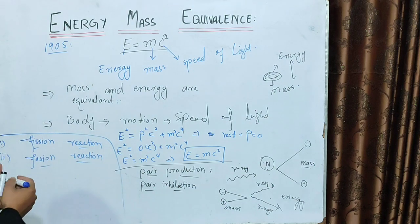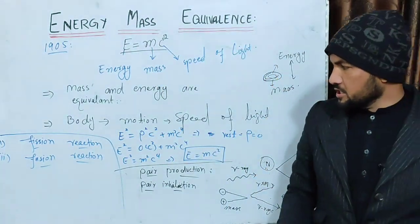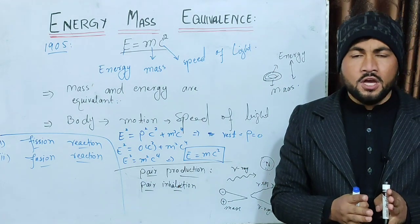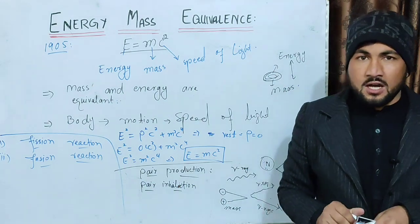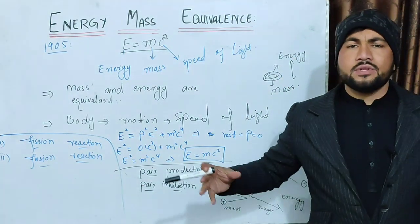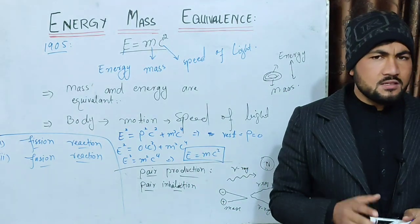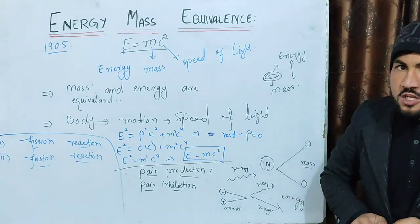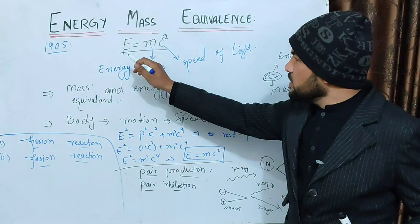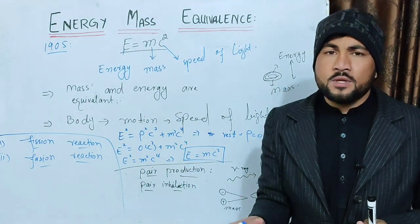These reactions occur at the atomic or nuclear level. Fission reaction and fusion reaction are nuclear reactions, and they demonstrate E is equal to mc squared — where mass energy is released or transformed.